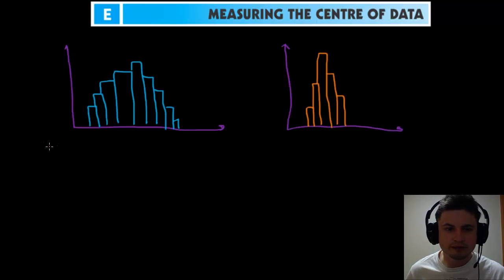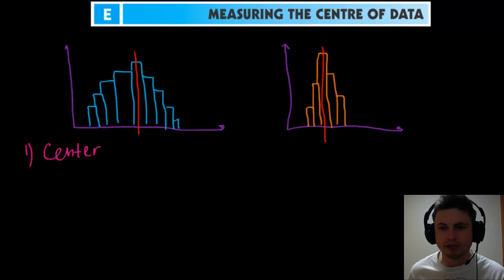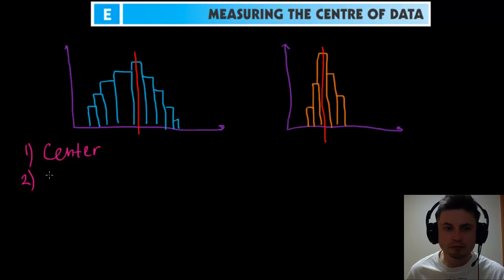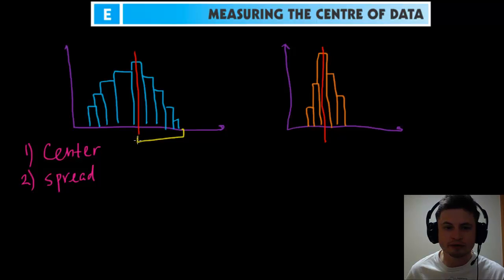The two important things in statistics are the center — that's the first one — and center refers to basically the middle of the data. This is where we talk about terms like the mean, the mode, and the median, which is what we're talking about today. But the other important measurement is the spread of the data, which refers to how spread out data is from the center.